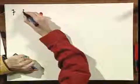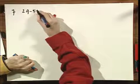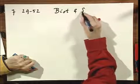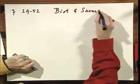Problem number seven, 2952. And here we have to deal with Biot and Savart, two Frenchmen.